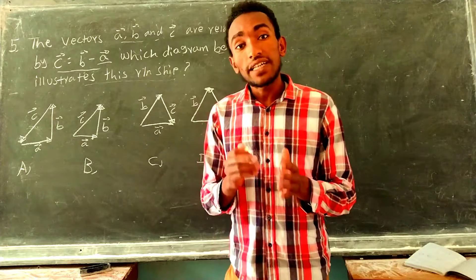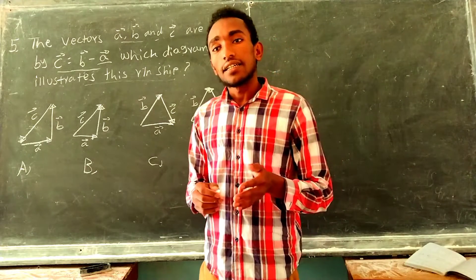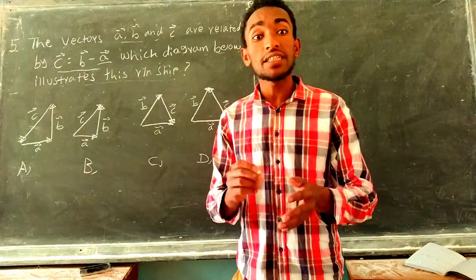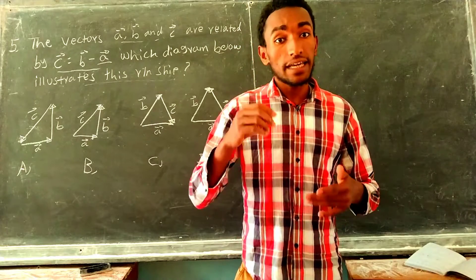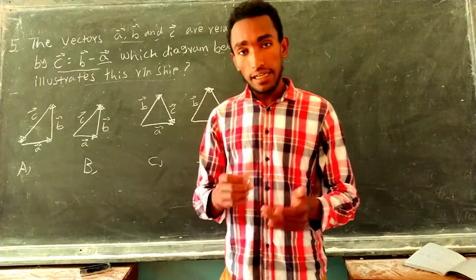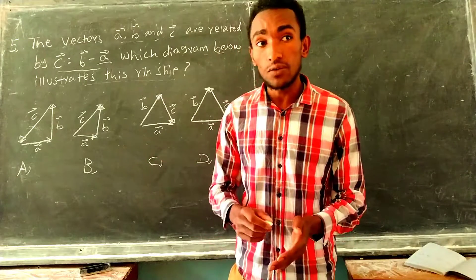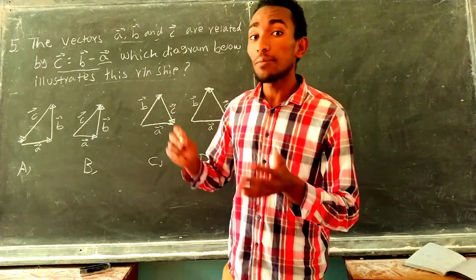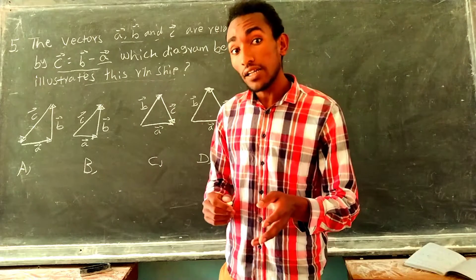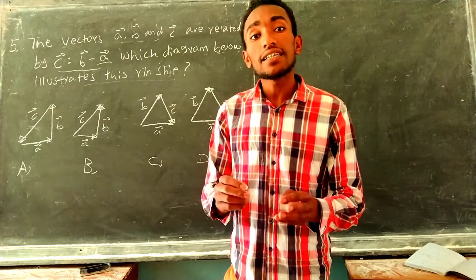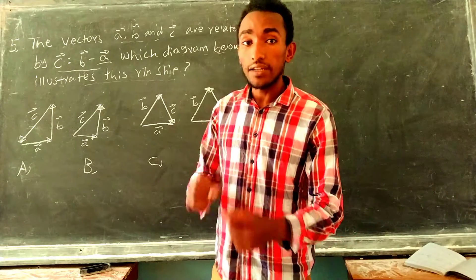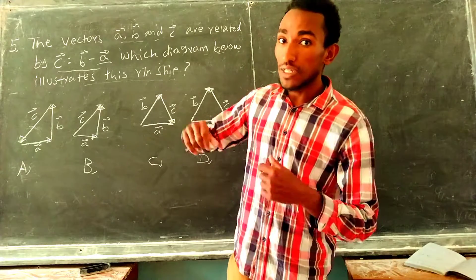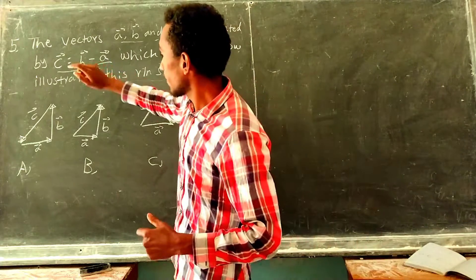When two vectors are added, the two vectors must be joined head to tail. Then the result must be drawn from the tail of the first vector to the head of the last vector. The result is that the tail of the first vector meets the head of the second.